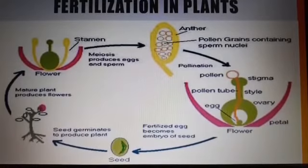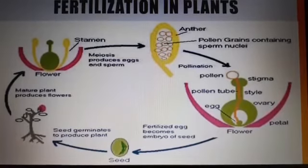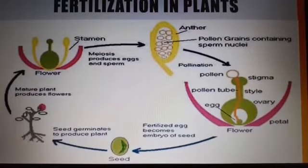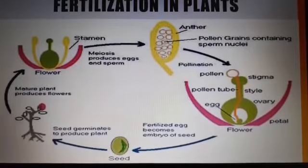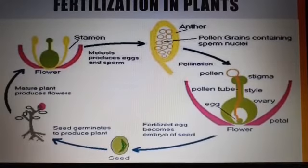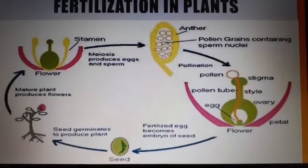Whenever these pollen grains reach downward, moving through the style of a flower, they release the sperm after reaching the ovary where the ovules are present. The released sperm combines with the egg to form the zygote.